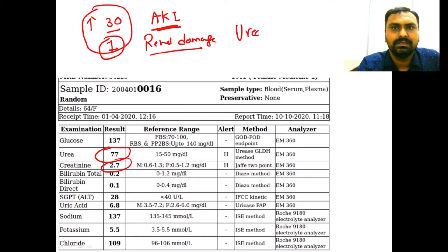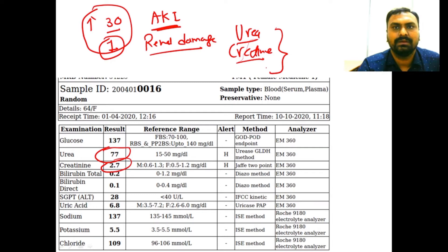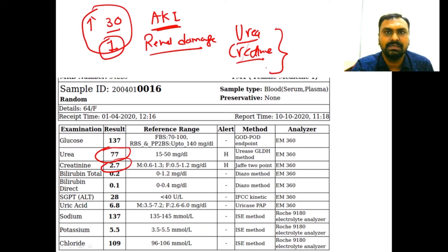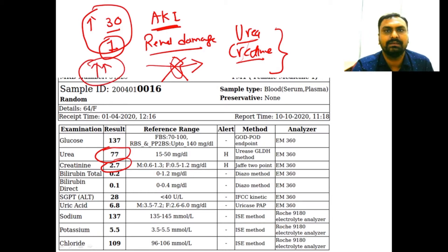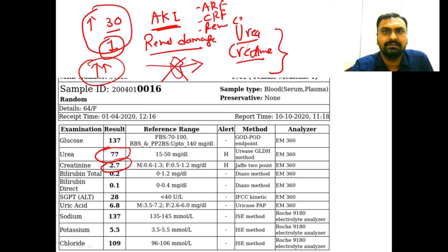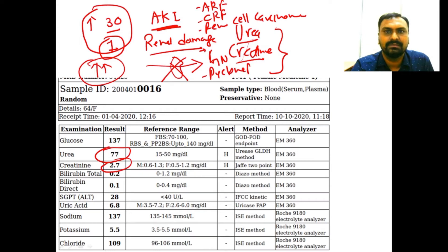Both urea and creatinine are excreted via the kidney into the urine. When the kidney is not functioning, these substances are not excreted and their level in the blood increases. Elevated urea and creatinine is suggestive of renal damage — it can be acute renal failure, chronic renal failure, renal cell carcinoma, glomerulonephritis, or pyelonephritis.